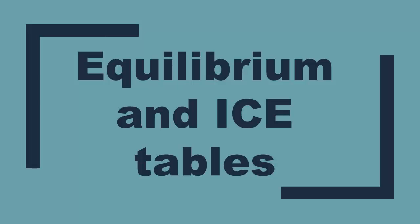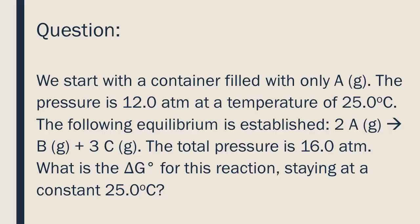Equilibrium and ice tables. We start with a container filled with only A. The pressure is 12 atmospheres at a temperature of 25.0 degrees Celsius. The following equilibrium is established: 2 A (g) ⇌ B (g) + 3 C (g).